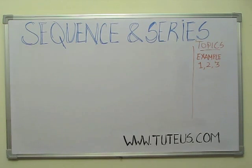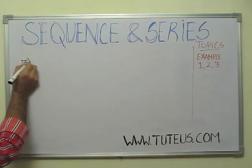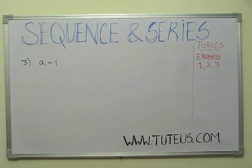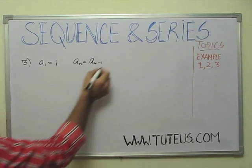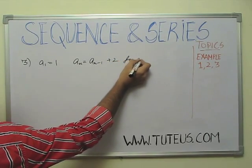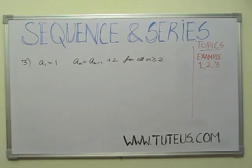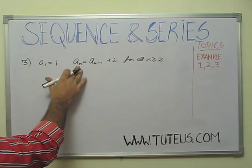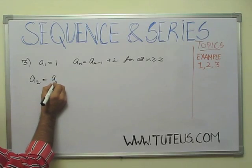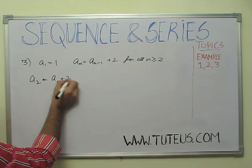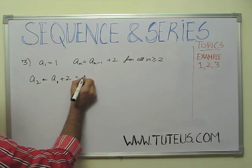Then, we will do the third example. Let the sequence an be defined as follows. So, it will be shown in the sequence. Now, this means what? If I talk about a2, I can find a2. If I find a2, how much will it be? It will be a2-1, which means 1 plus 2. If a1 is 1, so I will put it here. So, 1 plus 2, which means 3.